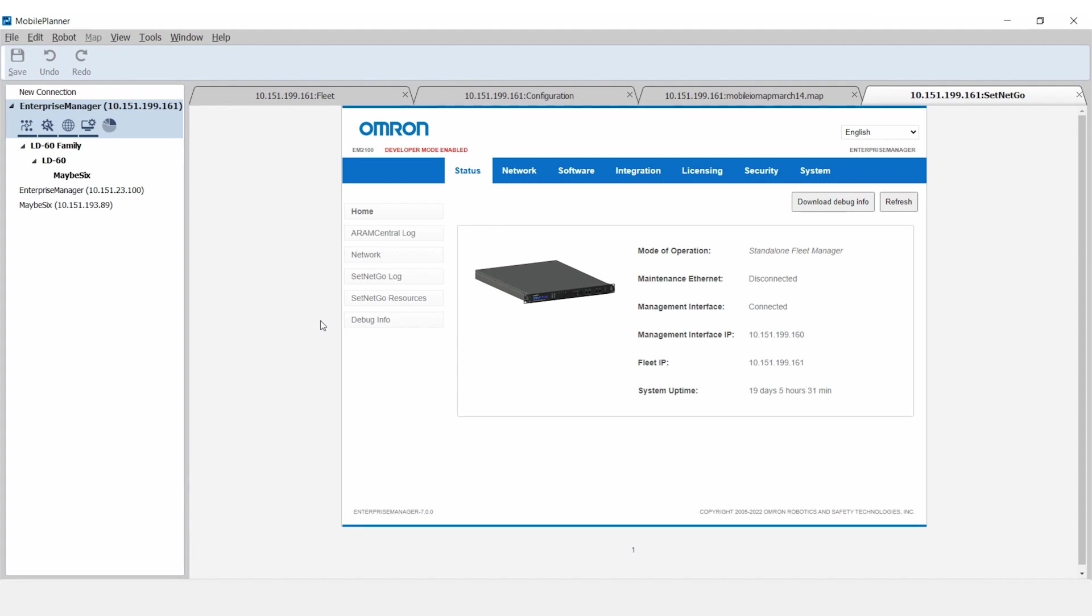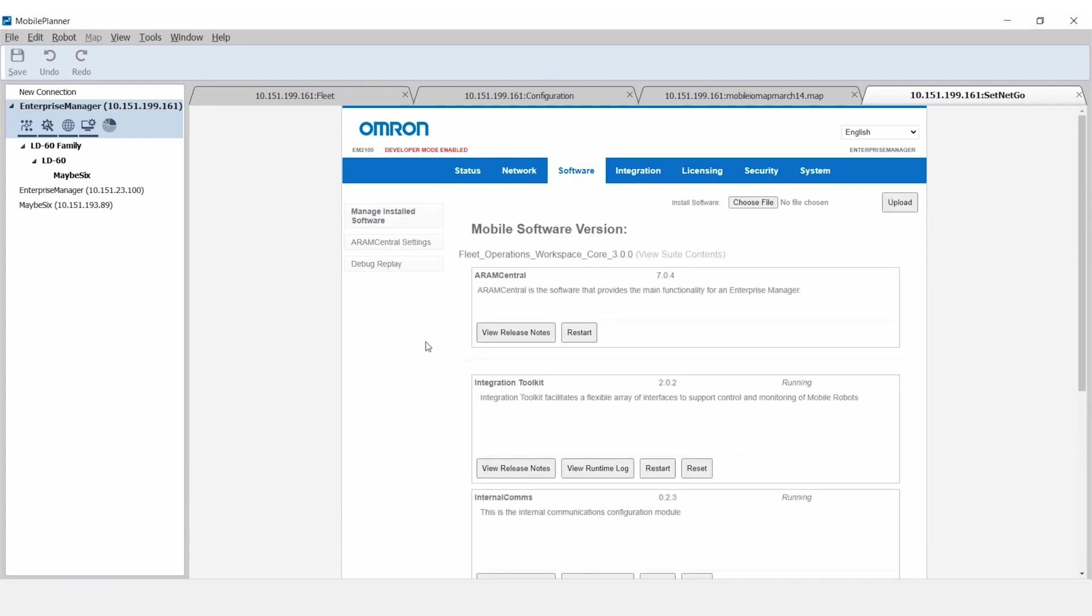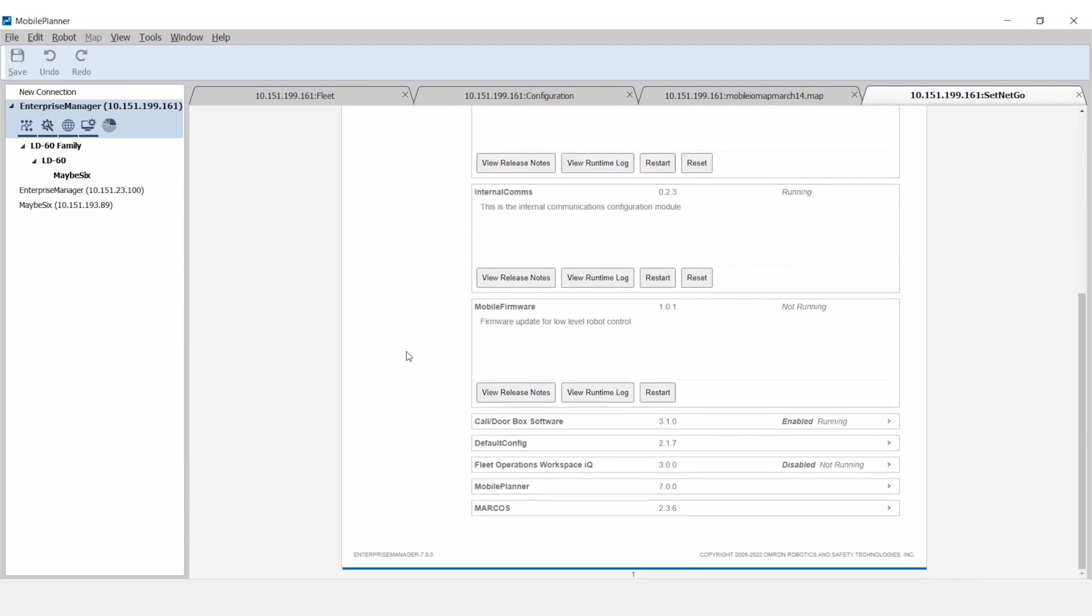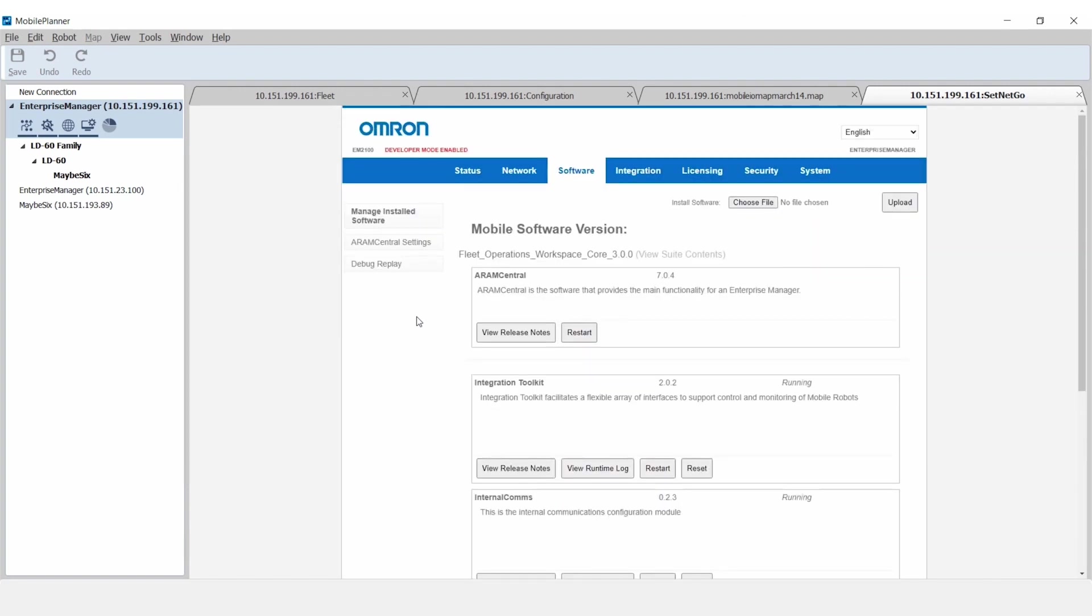Check if SetNet Go is configured for the Mobile I.O. Box by opening SetNet Go, selecting the tab Software, and checking the left column for Manage Installed Software. If Mobile I.O. is not visible in the list of installed software, check that Flowcore 3.1 or higher is installed. Flowcore software with versions below 3.1 does not have the Mobile I.O. software package available.